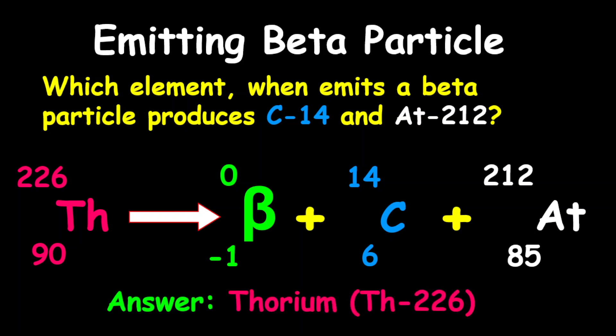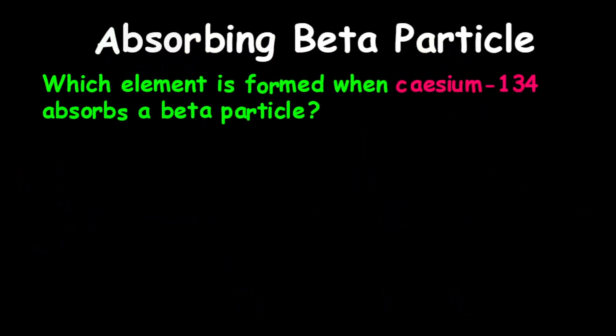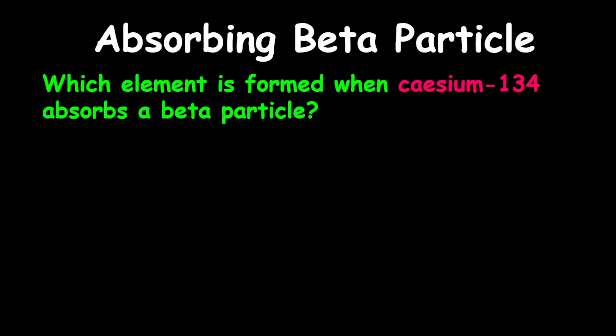For our final example, we're looking at the absorption of beta particle. The question reads: which element is formed when cesium-134 absorbs a beta particle?